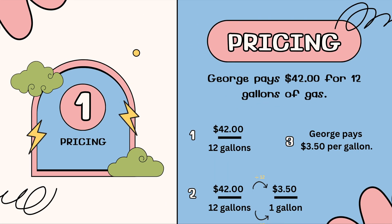This is a pricing example. George pays 42 dollars for 12 gallons of gas. So first I'm going to write the ratio: 42 dollars over 12 gallons. You can notice that I put 42 over 12 and I set it equal to something over 1.